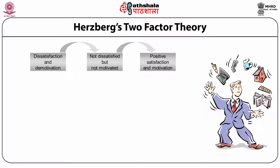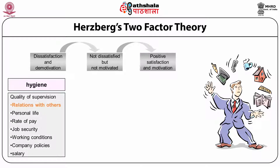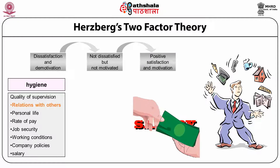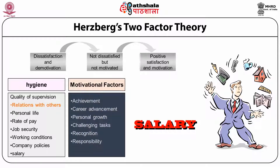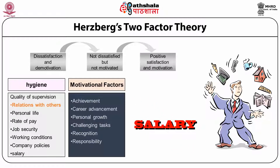We are talking of interpersonal relations and recalling Herzberg's two-factor theory. There are certain hygiene factors and motivational factors in this theory. In the hygiene factors, there is one aspect concerned with relations with others, apart from pay, job security, working conditions, company policies, salary, and quality of supervision. On the other hand, motivational factors include achievement, career advancement, personal growth, challenging tasks, recognition, and responsibility.